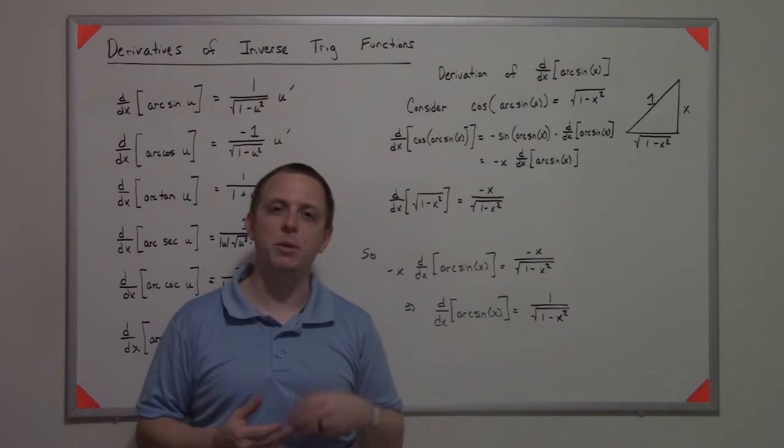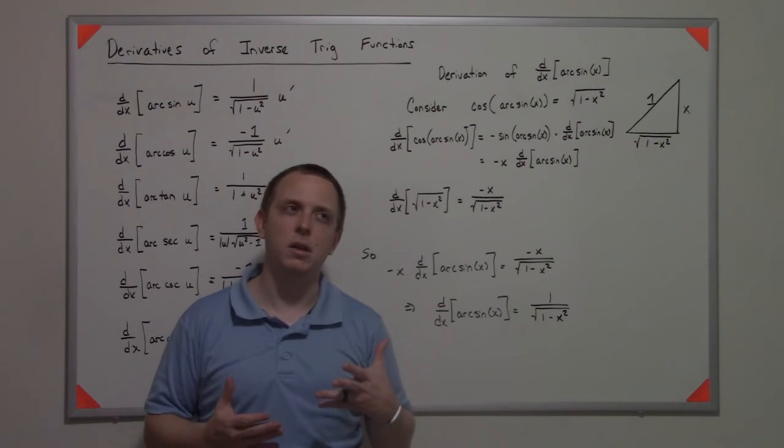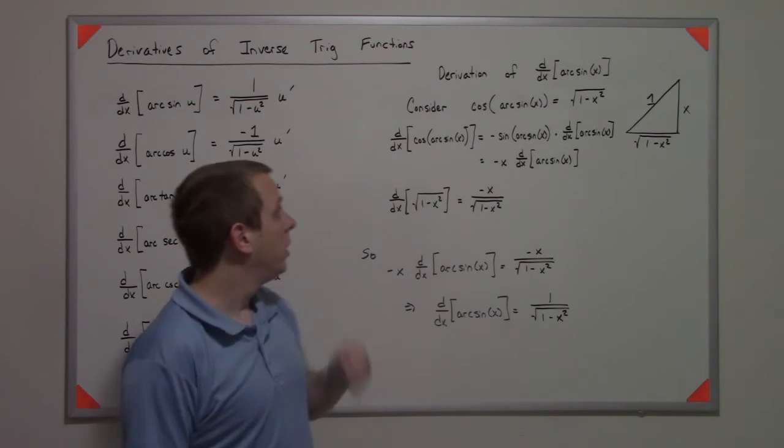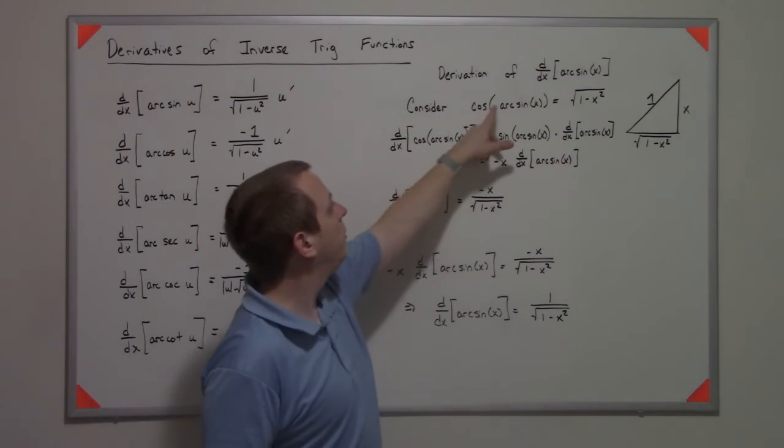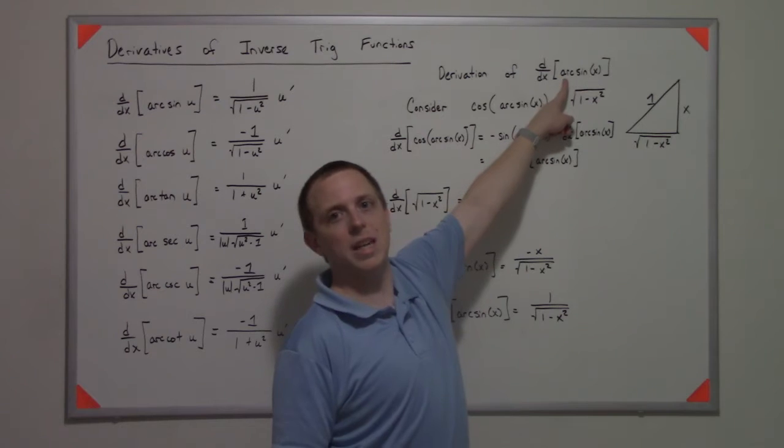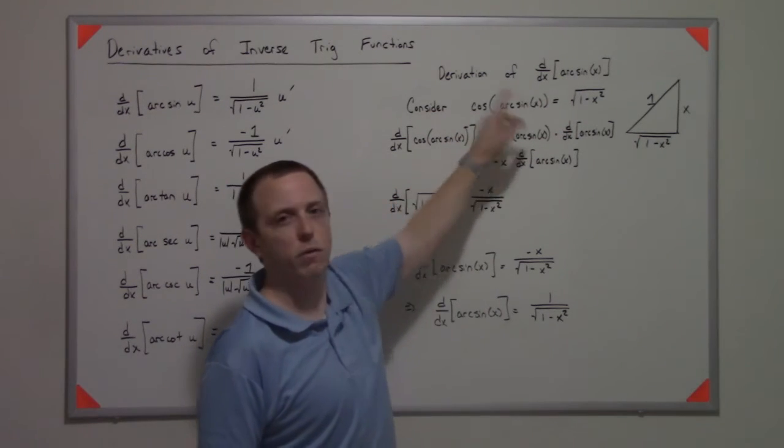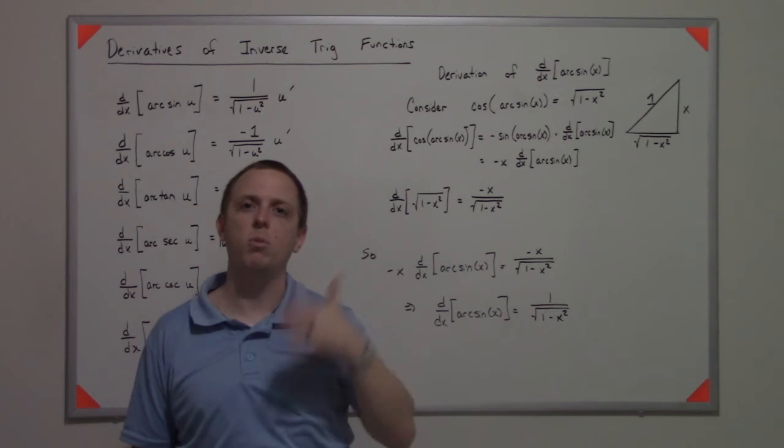I wanted to show you the idea with the chain rule and where this comes from, because this is probably the most straightforward way to think about it. If I want to find the derivative of the arc sine function, I'm going to think about cosine of arc sine.